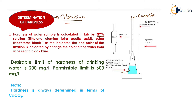Eriochrome Black T is mixed into the water sample whose hardness is to be determined. When added, the color of the water changes to wine red. We then slowly add EDTA solution from the burette while stirring. We stop the addition of EDTA when the color changes from wine red to blue-black — this color change indicates that the end point of the titration has been reached.